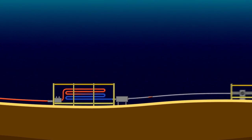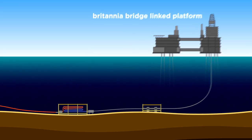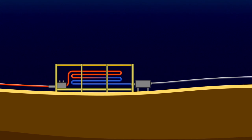The PIG is sent from a temporary subsea launcher on the manifold and is recovered topside at the Britannia Bridge-Linked Platform, where condition data is downloaded and analyzed.